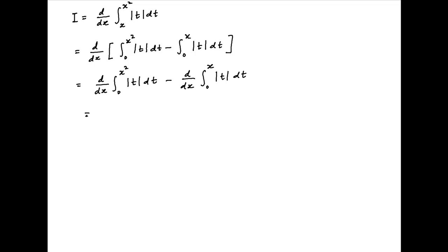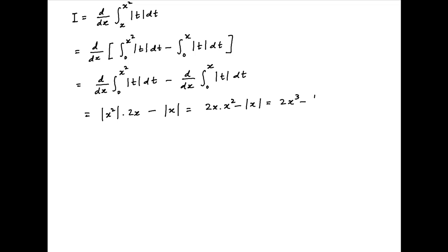The first term is equal to the integrand |t| with t replaced by x² times the derivative of the upper limit x², and the second term is equal to minus the integrand with t replaced by x. Since |x²| = x², this gives 2x times x² minus |x|, which equals 2x³ minus |x|.